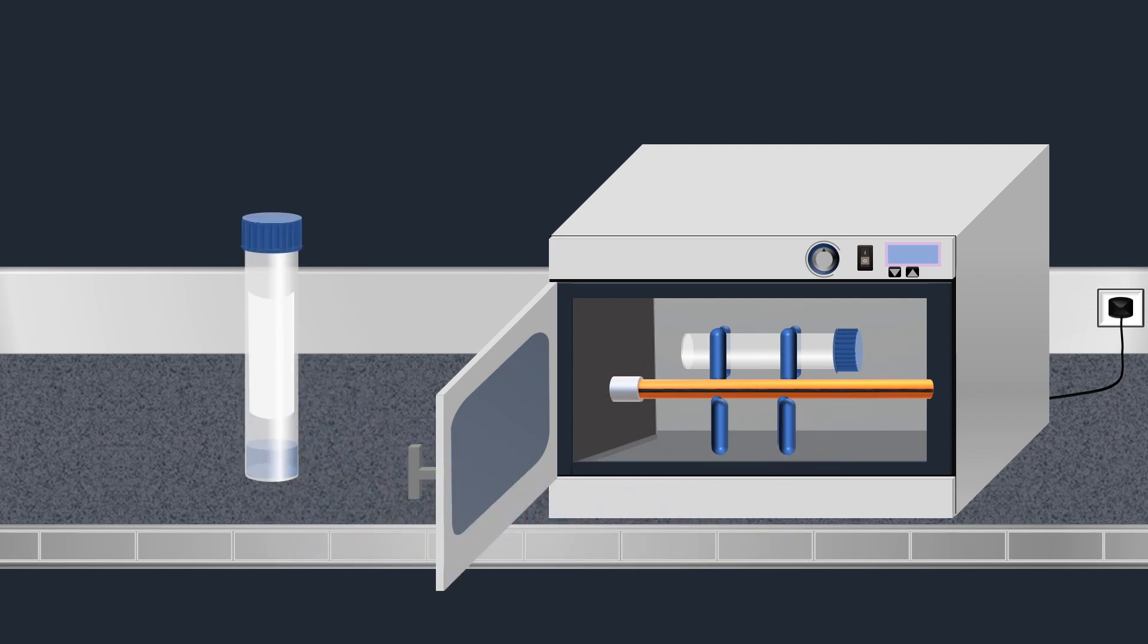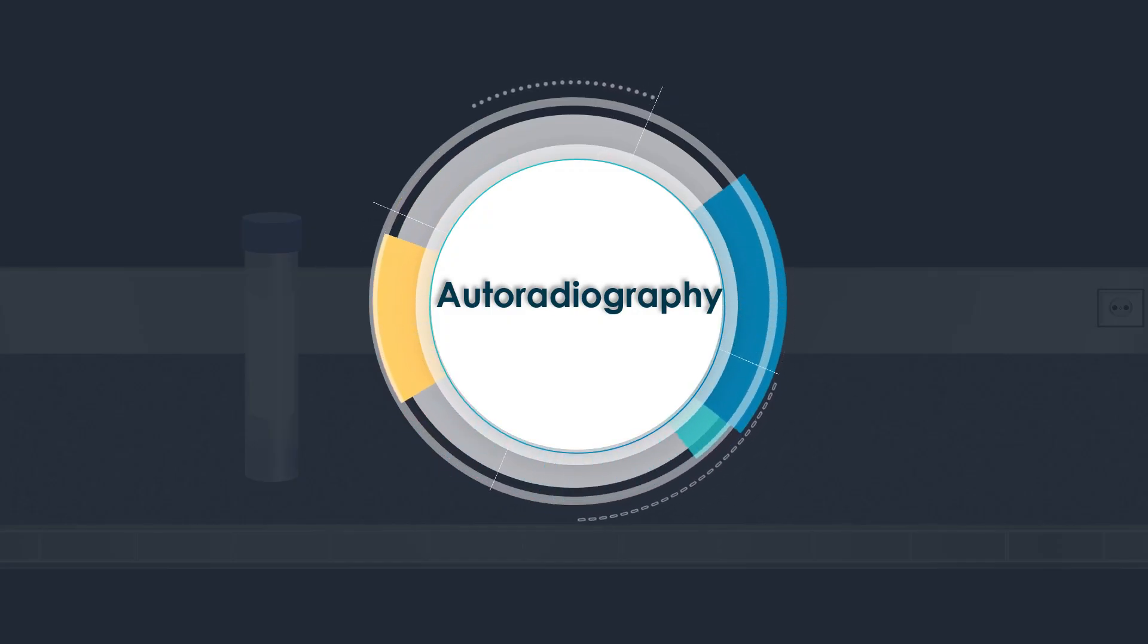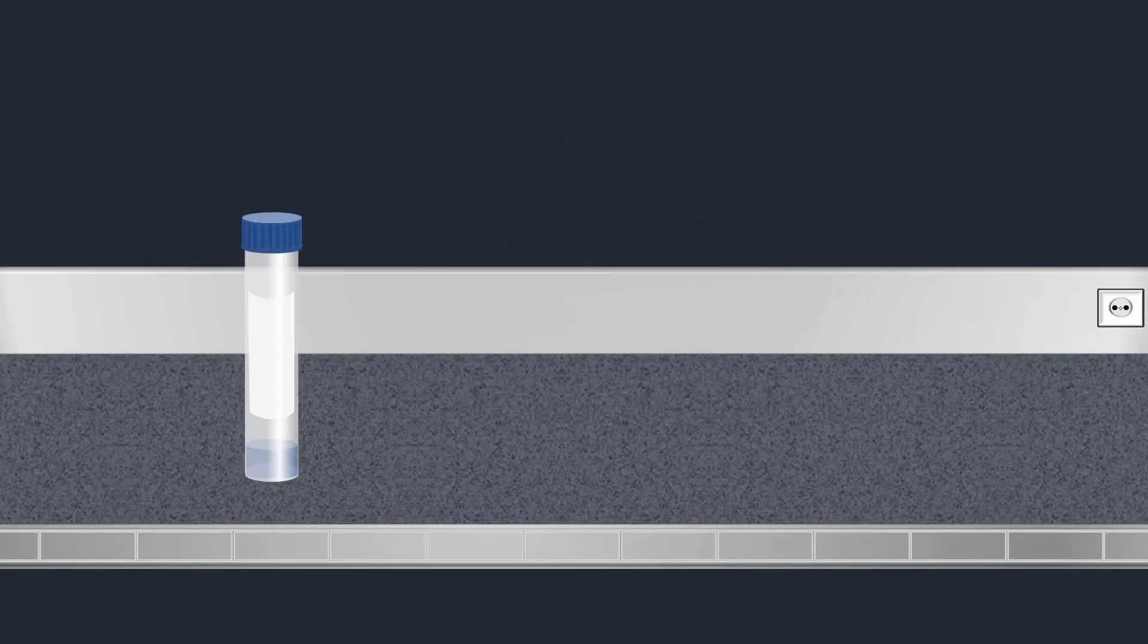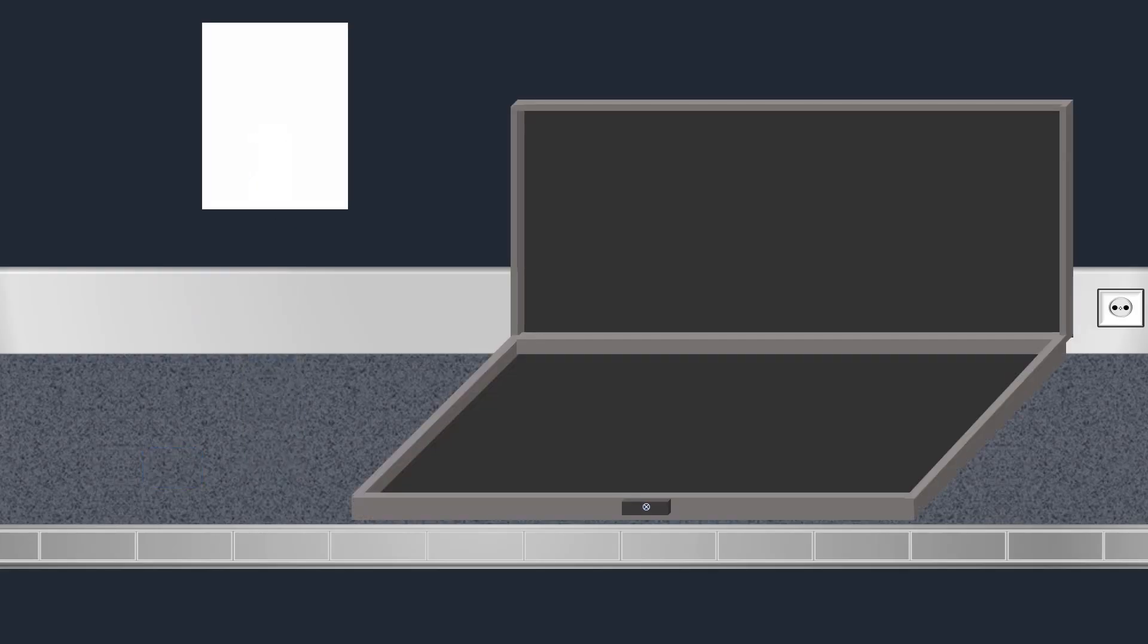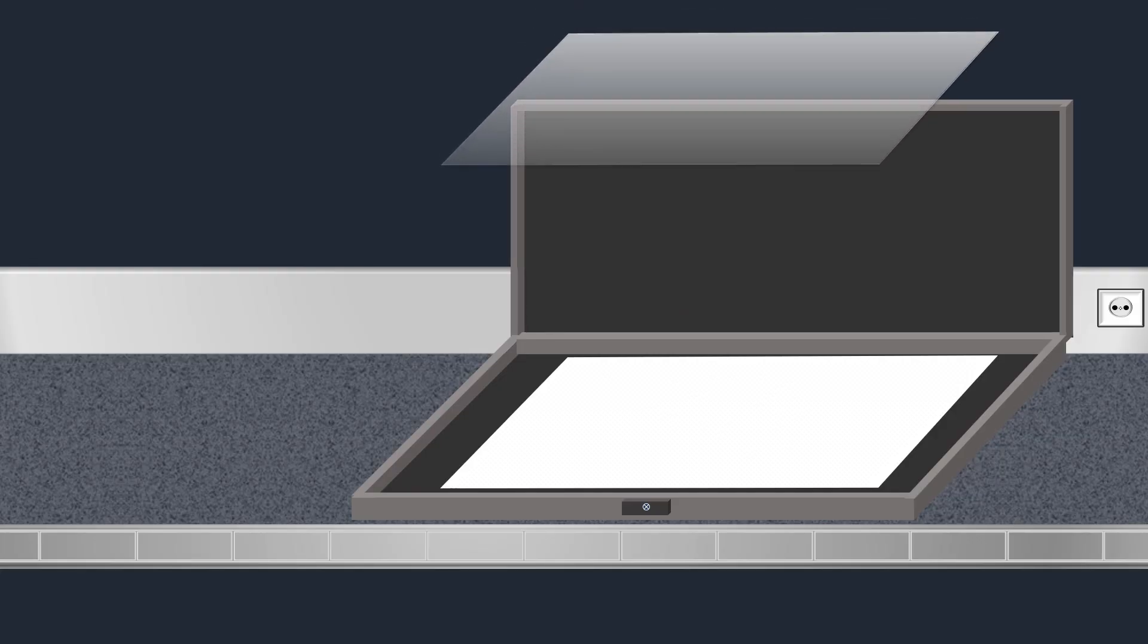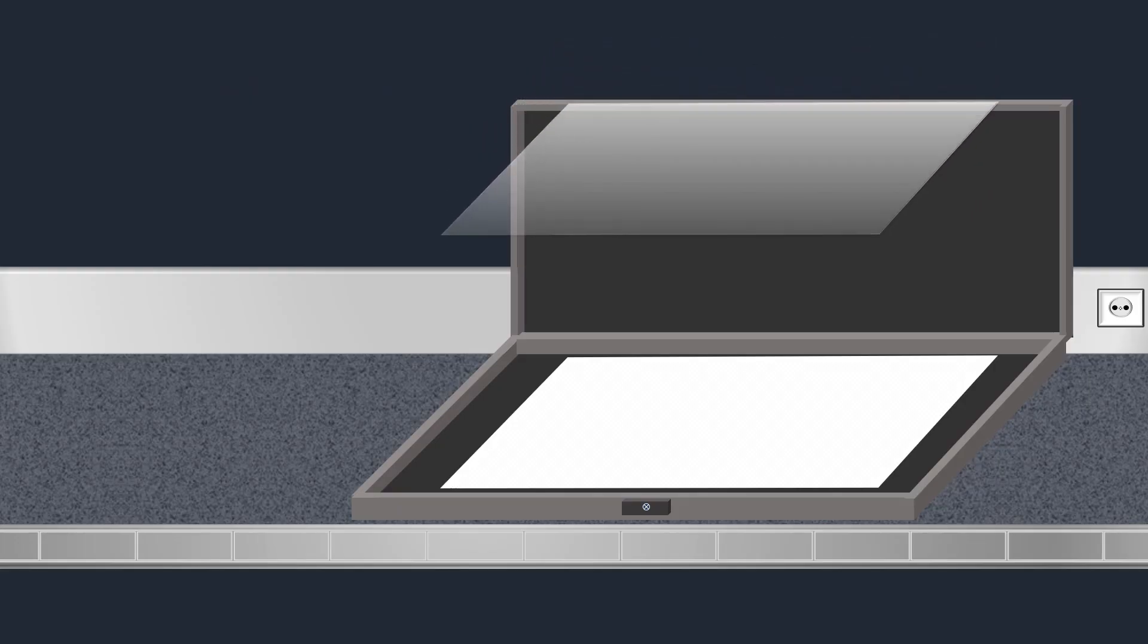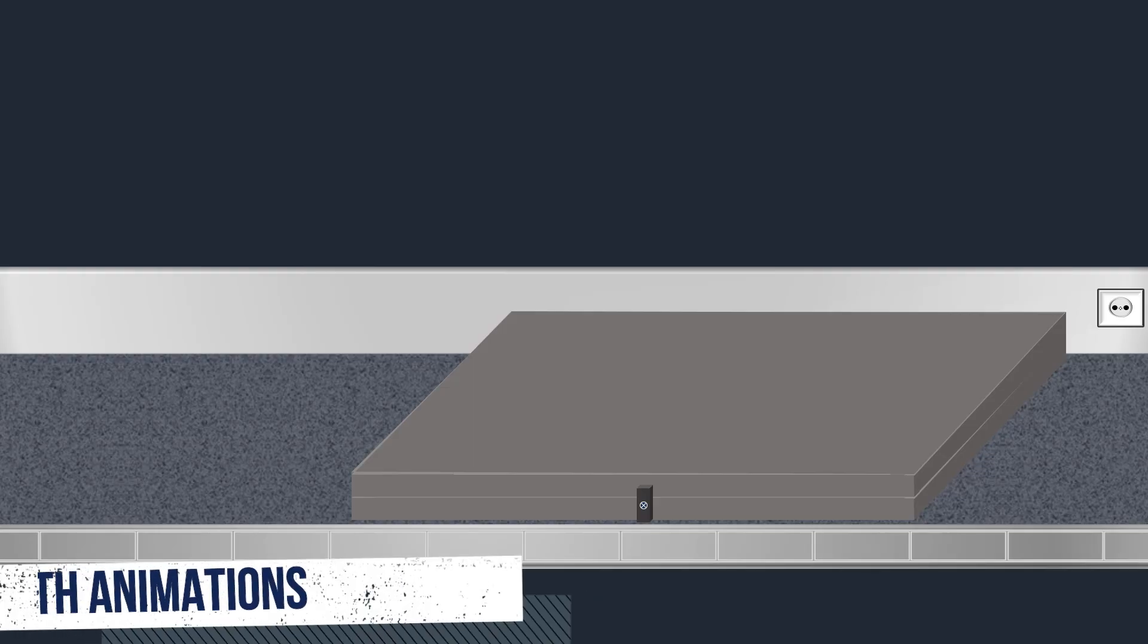After hybridization, an autoradiography method is carried out to identify the location of radioactively labeled RNA in the membrane. The northern blot filter is placed inside a light-proof cassette box, then an X-ray film is laid over the top. The cassette is closed and left for several hours to several days.